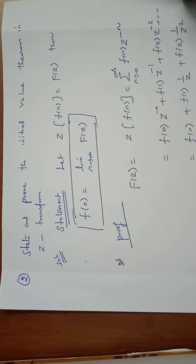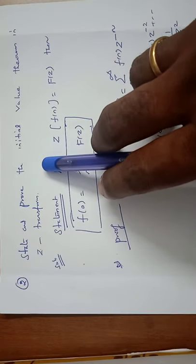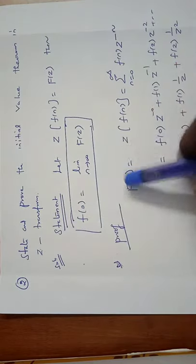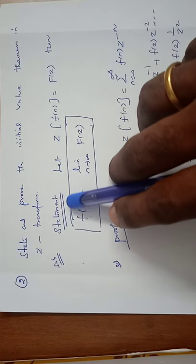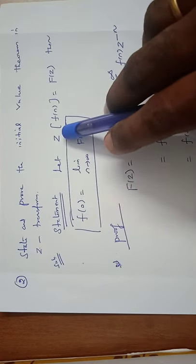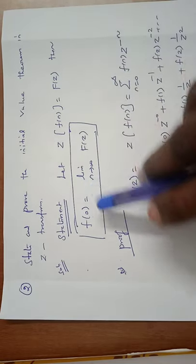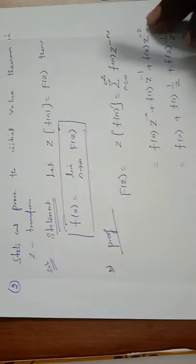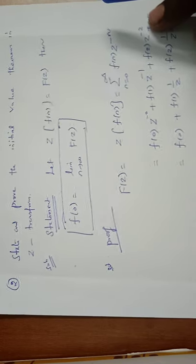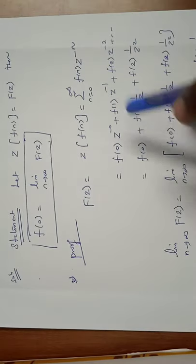Now let us move to the second problem: state and prove the initial value theorem in Z-transforms. First we write down the statement. The statement of the initial value theorem is: if Z{f(n)} = F(z), then f(0) equals the limit as z tends to infinity of F(z).